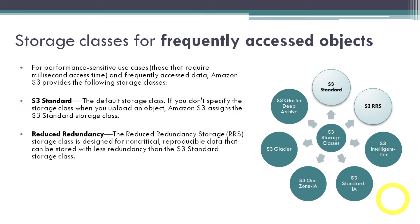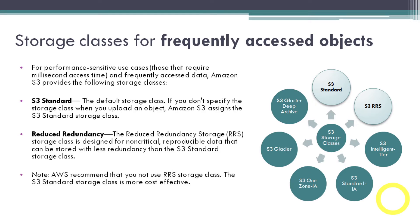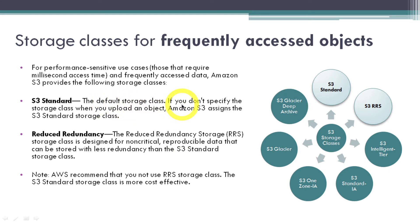The second class is Reduced Redundancy Storage, or RRS. The RRS storage class is designed for non-critical, reproducible data that can be stored with less redundancy than the S3 Standard storage class. Note that AWS recommends you do not use the RRS storage class, as S3 Standard is more cost effective. Instead of RRS, use S3 Standard — you get more redundancy, better performance, storage across multiple Availability Zones, and lower charges.